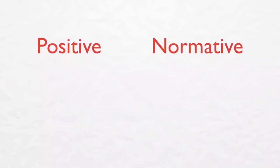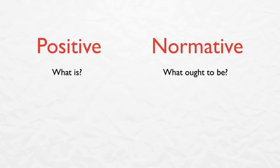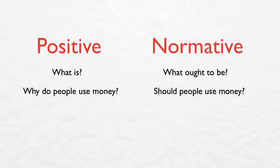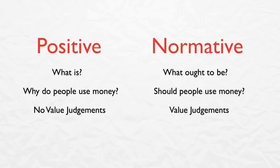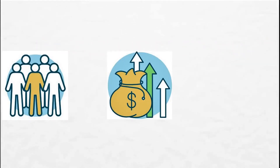All economic questions fall into two categories: positive and normative economics. Positive economics deals with what is, while normative economics deals with what ought to be. For example, 'Why do people use money?' is a positive economics question, whereas 'Should people use money?' is a normative question. A general rule of thumb: if your economic model has no value judgment, it's positive economics; if it does have a value judgment, it's normative economics.